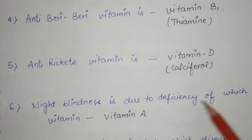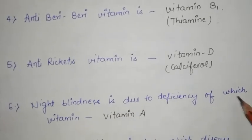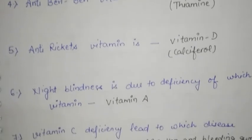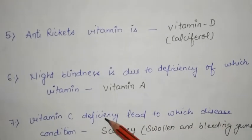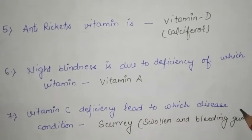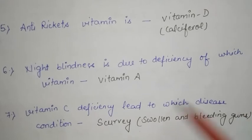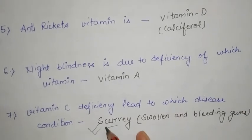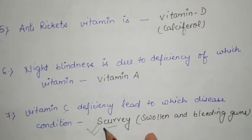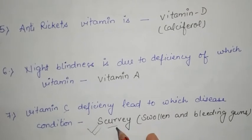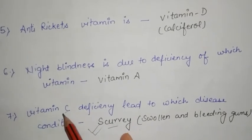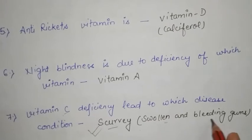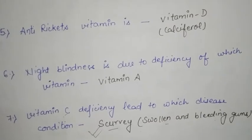Night blindness is due to deficiency of vitamin A. Vitamin C deficiency leads to scurvy. This is a commonly asked question — scurvy is caused by vitamin C deficiency, presenting with swelling and bleeding gums.